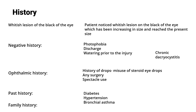Past history and family history: ask about diabetes, as patients are more prone to infections; hypertension; and bronchial asthma — because of steroid use. Systemic steroid use can cause immunosuppression and increase the risk of infections including corneal infections.